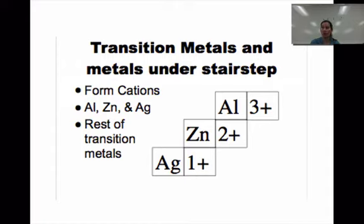So aluminum will always form a plus 3 ion, zinc a plus 2, and silver a plus 1. Now, if you look at your periodic table, you can see that this is pretty easy to remember because of their positioning on the table.